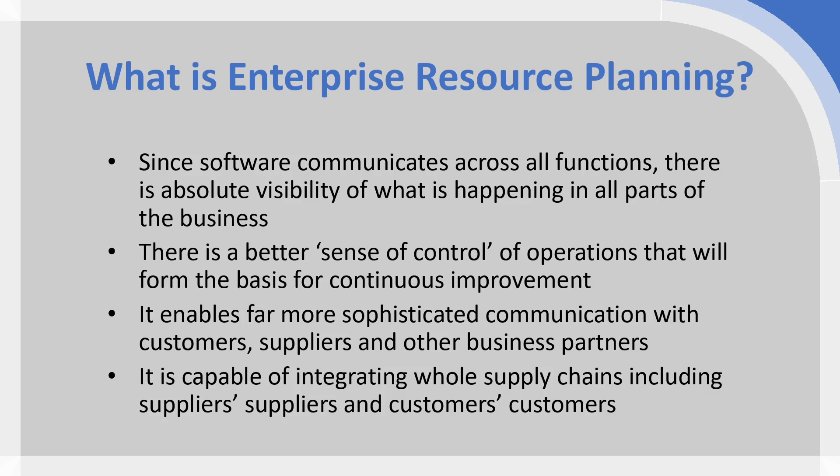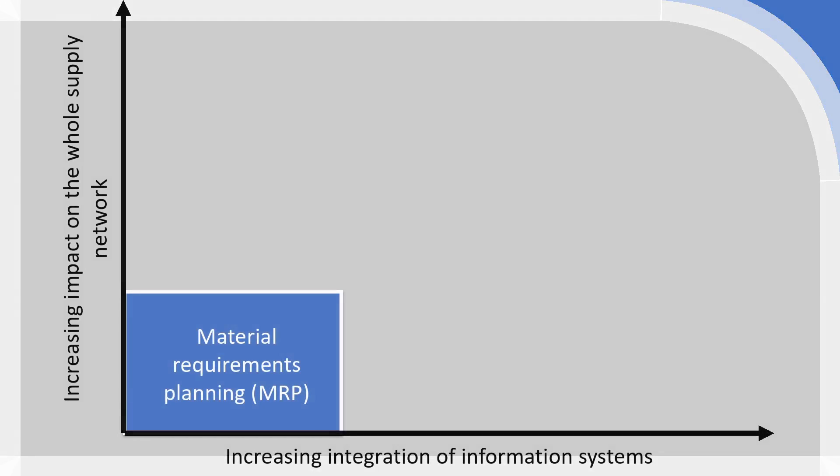There are gradients to this kind of system integration. We are going to work through four different levels. On the bottom axis is increasing integration, and at the top is the increasing impact on the supply network or supply chain as a whole. The first level would very much just be material requirements planning, where we identify what materials are required and have a breakdown of the materials into our particular product or component, with big implications for inventory management, purchasing, and ordering upstream materials.